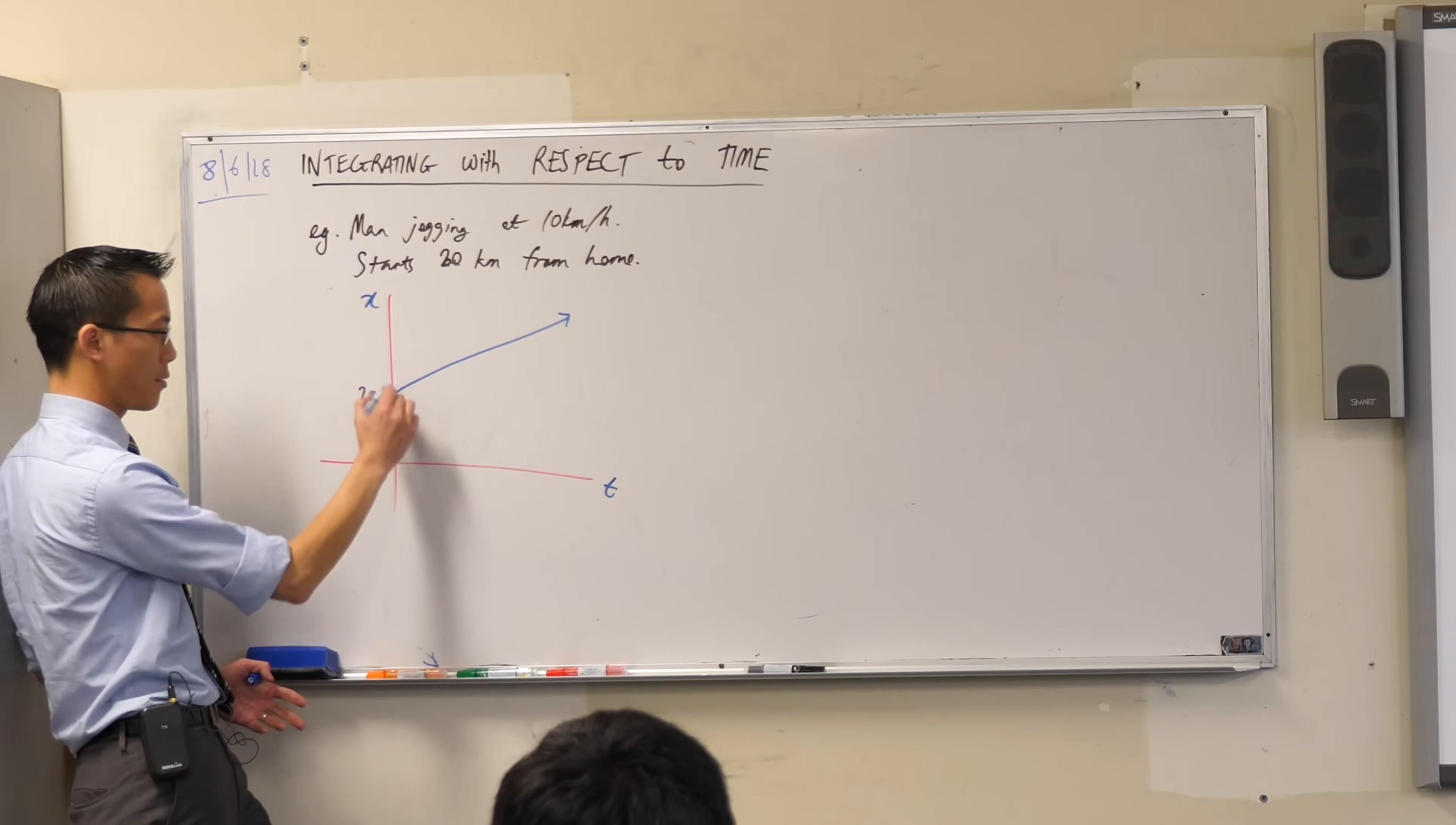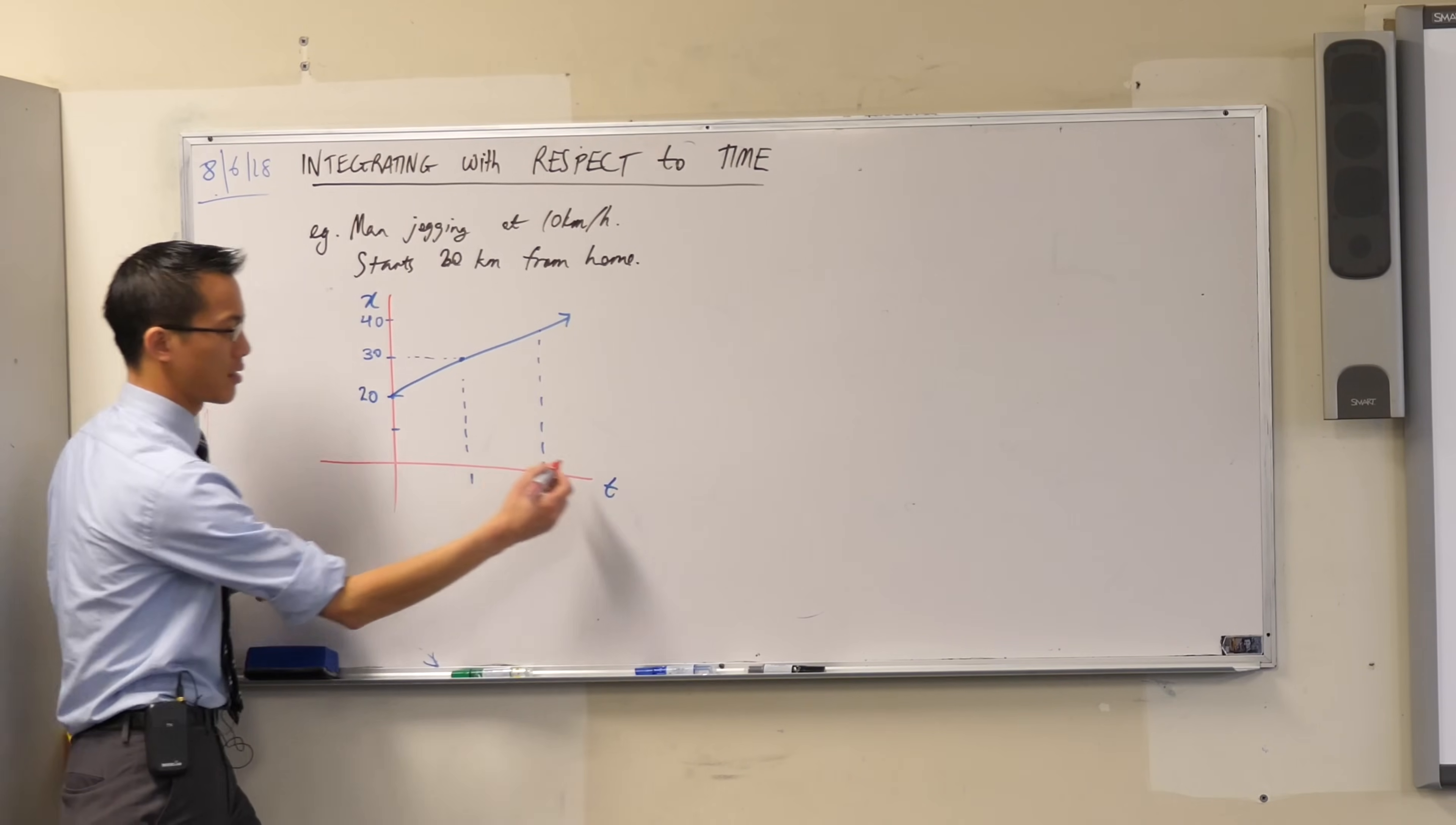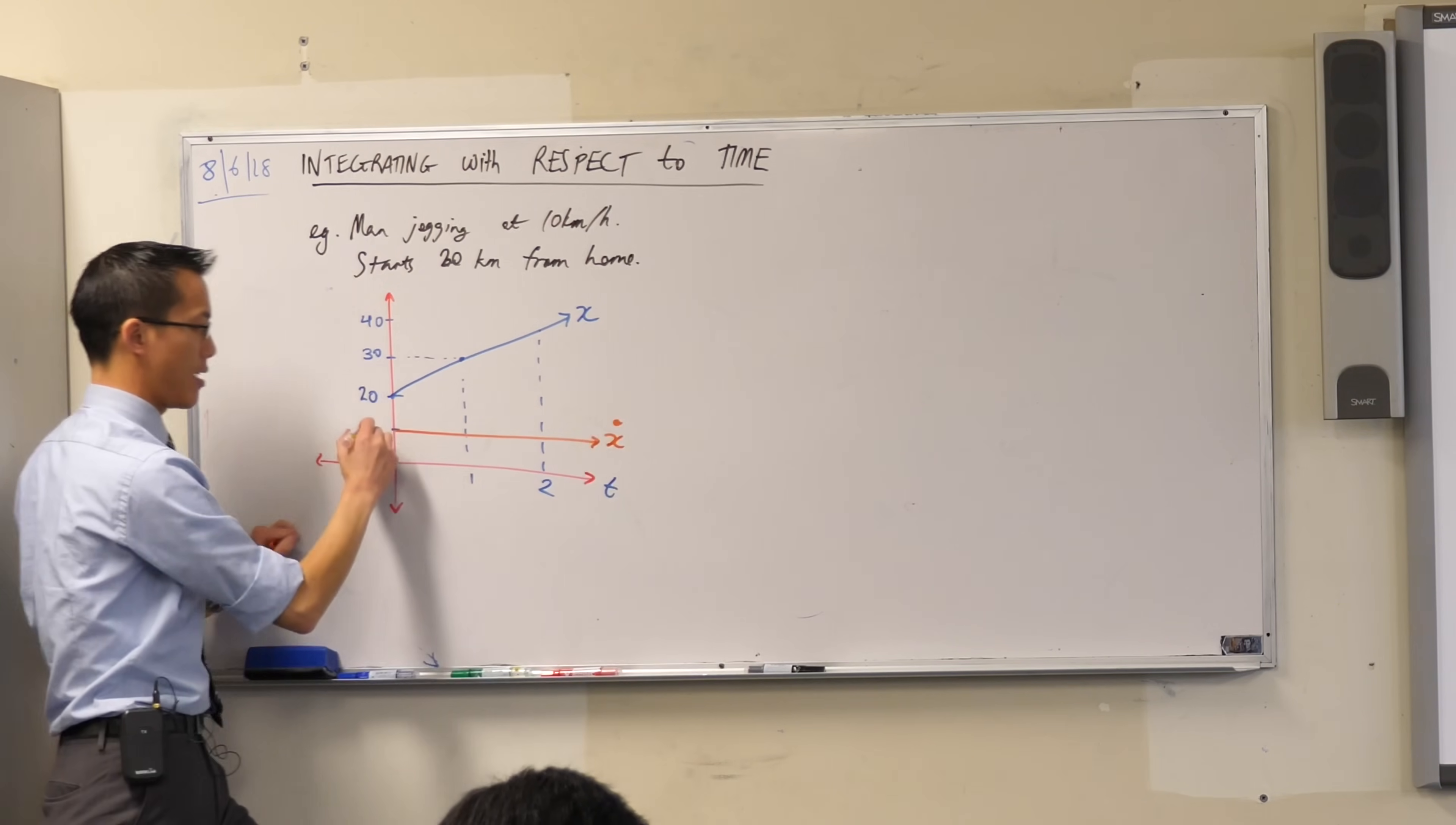So for instance, if that's 10, that's 20, that's 30, at what time will he be 30 kilometers away from home? After one hour. So that means time one, and then if we have a look at when he's 40, that should be at time 2. So this is our displacement time graph. On the same axis, we can also put in our velocity time graph. So now when I put in my velocity graph, what's it going to look like? This is his velocity, does it ever change? Not in the context of this question, so it's just going to be a horizontal line. This is x dot, and it's at 10.